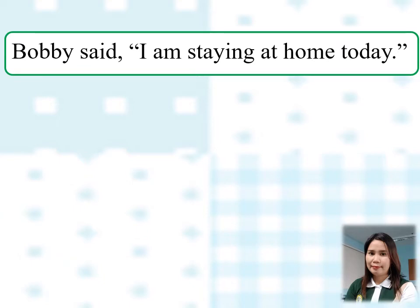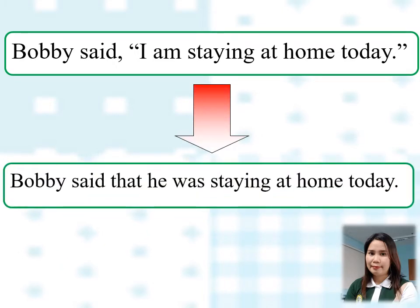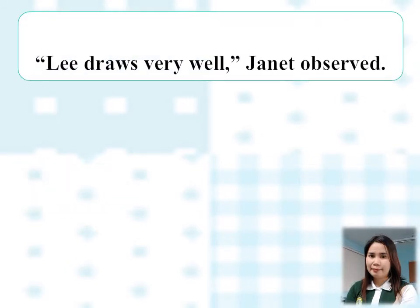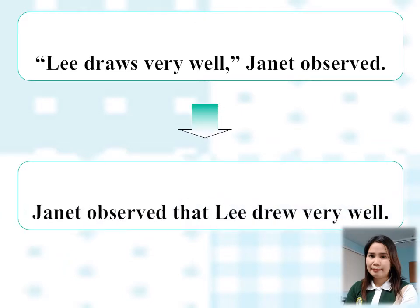Let's start with some examples. I want you to analyze the given group of sentences and write down your observations on your paper. Let's read sentence number one: Bobby said, "I am staying at home today." And the other one: Bobby said that he was staying at home today. Next example: "Lee draws very well," Janet observed. And: Janet observed that Lee drew very well.